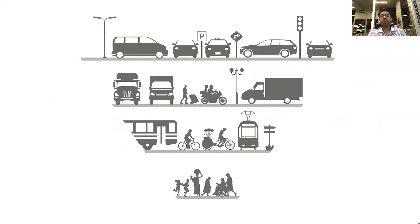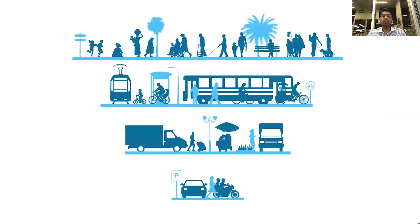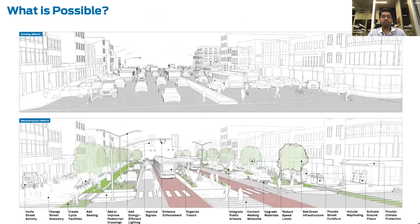The idea behind the document and our work is to inspire leaders to see what's possible on their streets, to inform practitioners about the global best practices, and empower communities about what to ask for. The basic premise has been to flip this age-old pyramid where the car has been king, to put people first — people of all ages and abilities on top, followed by public transportation, cycles, and then city services and cars.